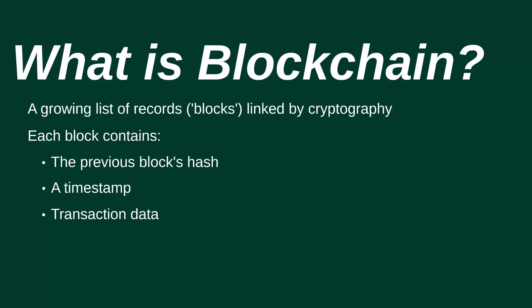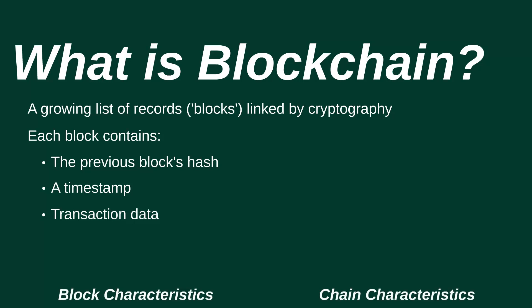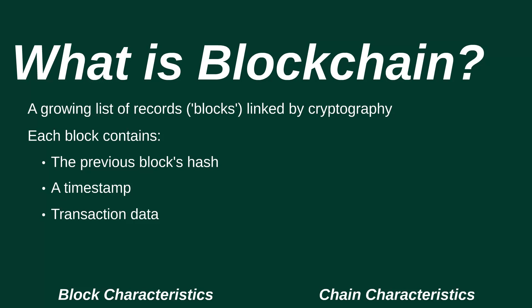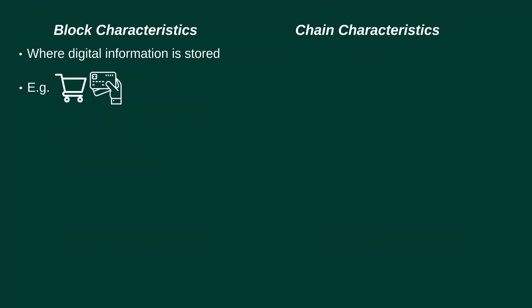Each block has the previous block's hash, a timestamp, and transaction data. Now let's look at the characteristics of the block, and then we'll move on to the characteristics of the chain which links the blocks. The block is where digital information is stored. Imagine you are making a purchase from an online retailer that uses blockchain technology like Bitcoin — in the block will be details of your transaction: what you bought, when you bought it, and how much you spent.